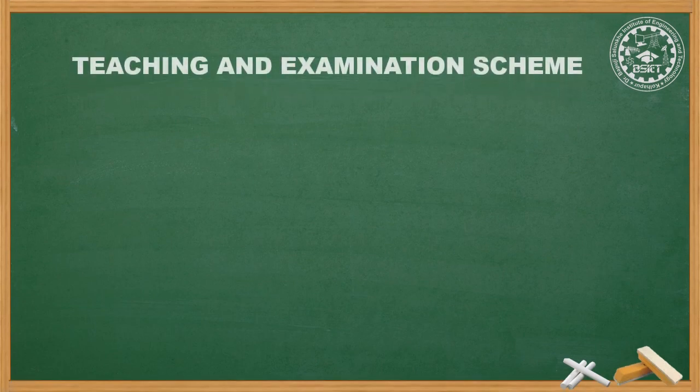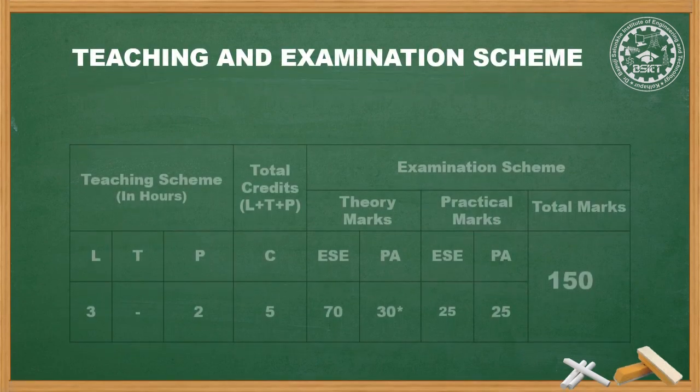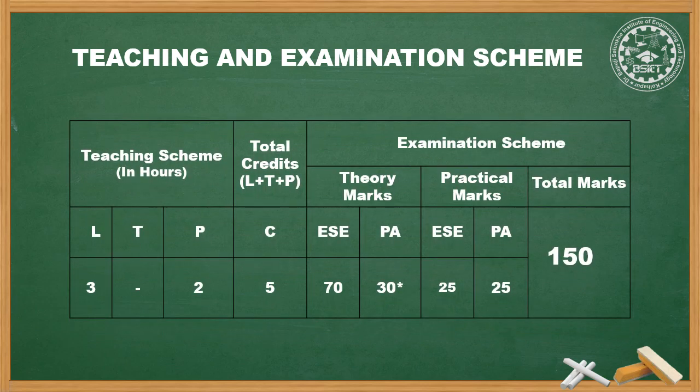For the teaching and examination scheme, we know that in the I scheme the theory paper consists of 70 marks for the end semester examination and 30 marks for progressive assessment, which is the combined marks of class test and micro project. In this subject we have an external practical end semester examination of 25 marks and practical progressive assessment of 25 marks. Total 150 marks are allotted for this subject.